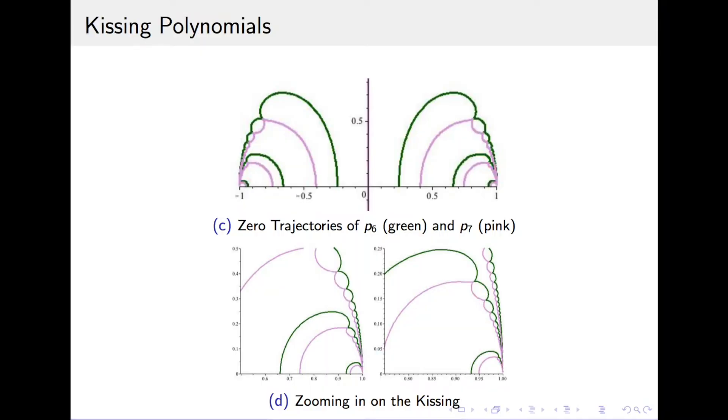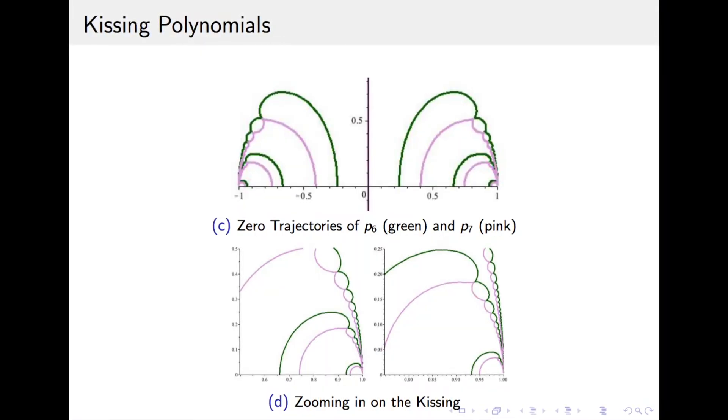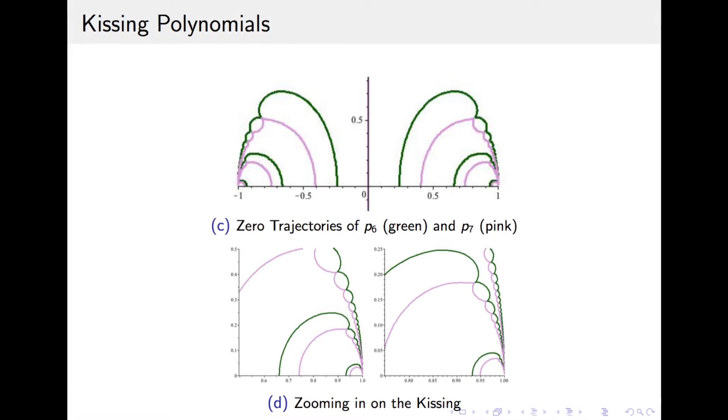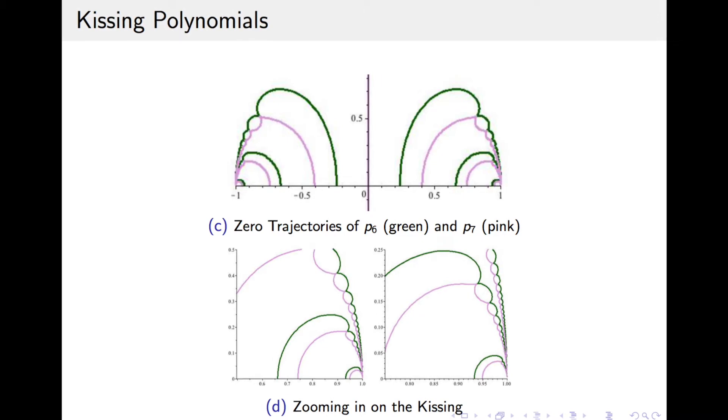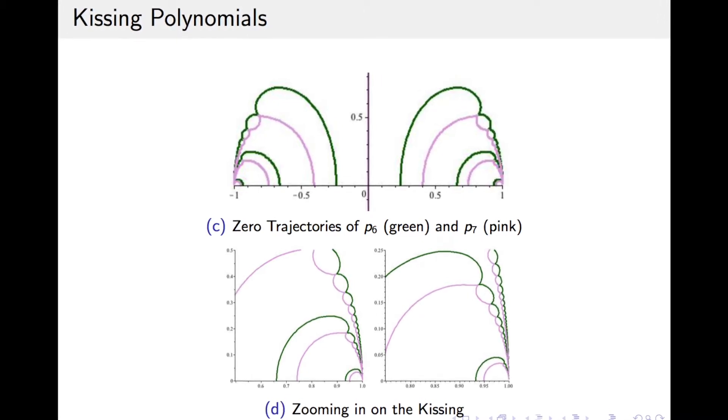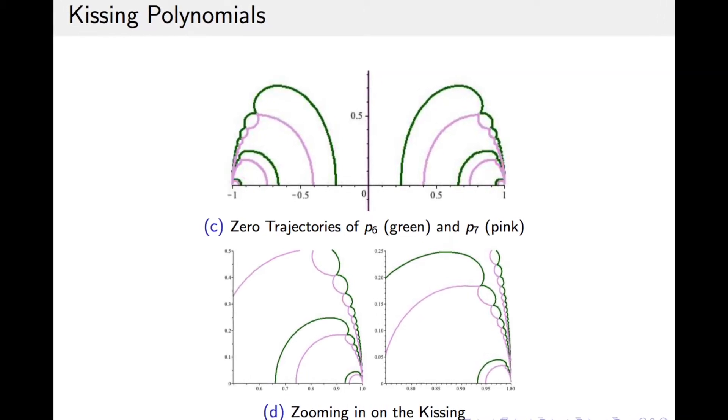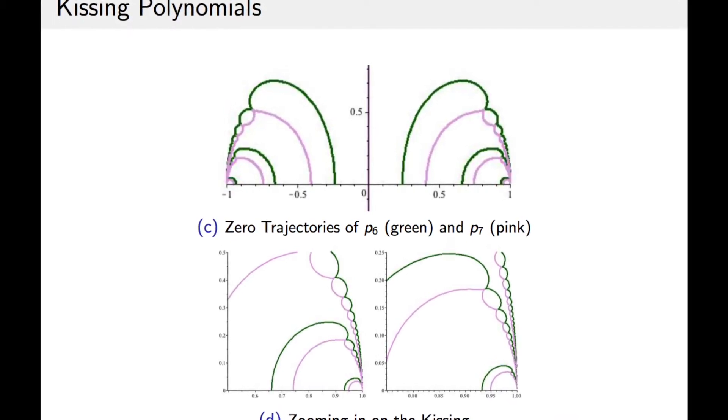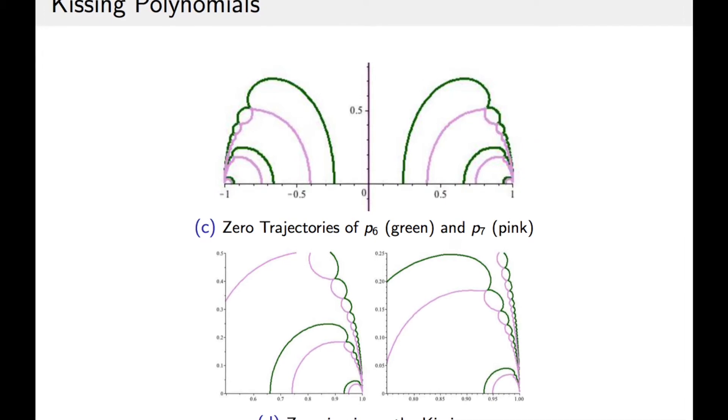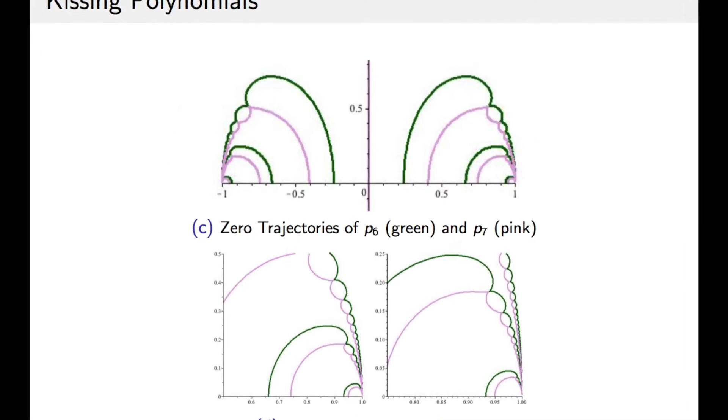Take a look at this figure here. We have the trajectories of the sixth and seventh degree kissing polynomials as omega goes from zero to infinity. Every kissing point in the figure corresponds precisely to a value of omega for which the odd-degree kissing polynomials fail to exist. Note also the interesting fractal structure of these zeros. As we zoom in at the endpoints, we see that this kissing pattern keeps on repeating.